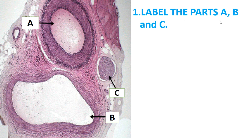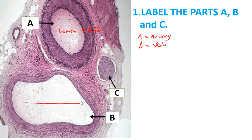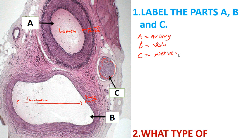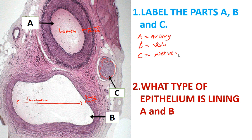Label parts A, B, and C. Part A is the artery — it has a small lumen and thick muscle walls. Part B is the vein — it has a wide, large lumen and the muscle walls are not as thick as those of the artery. Part C is a lymphatic vessel — as you can see, there is no lumen.